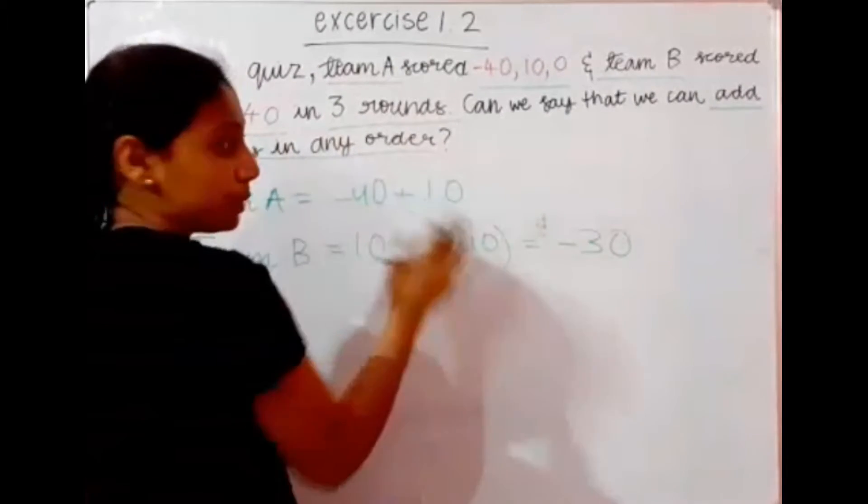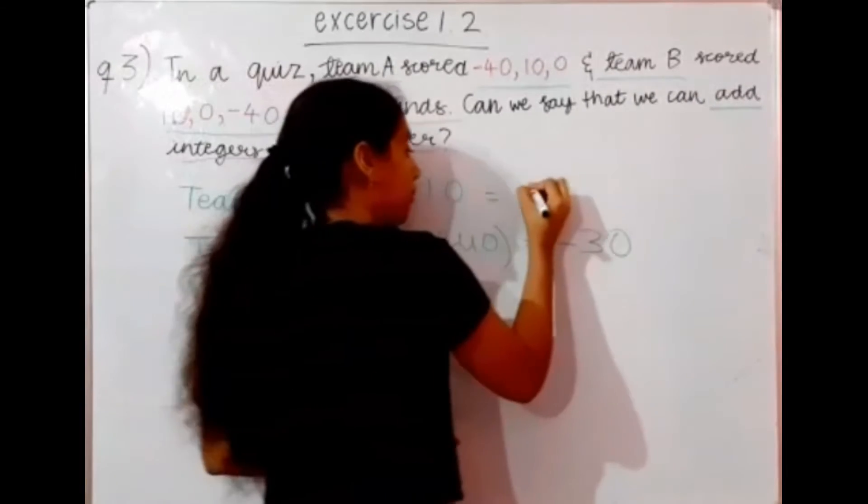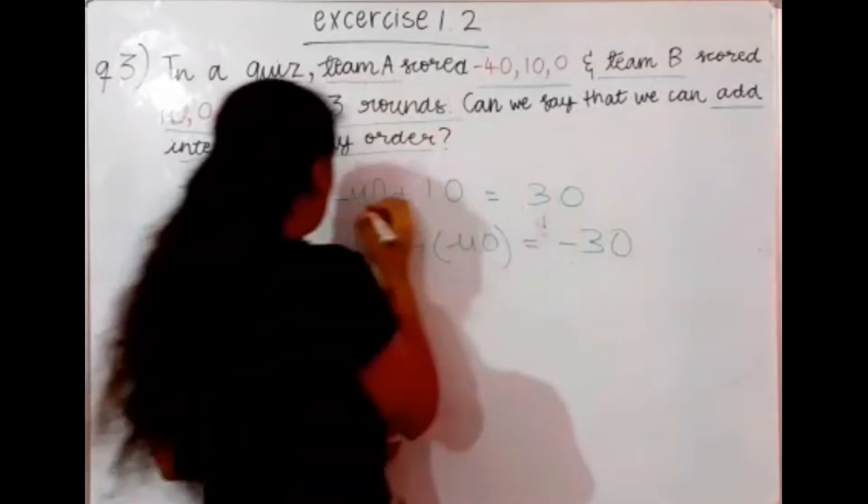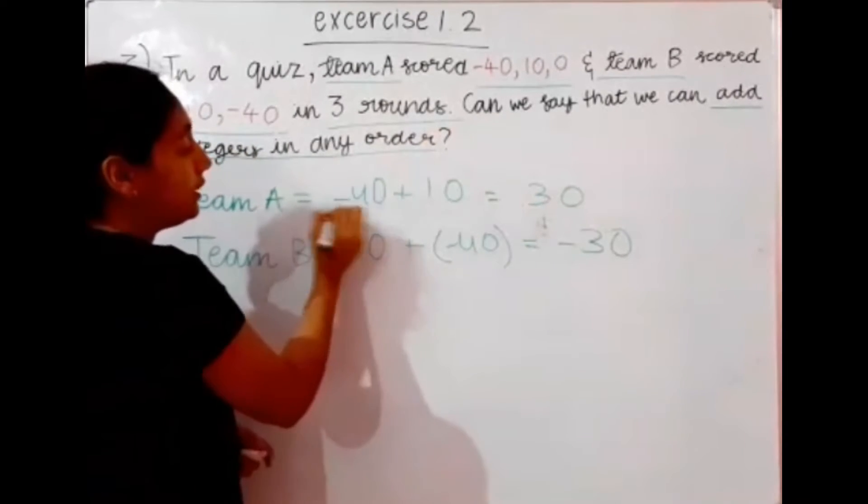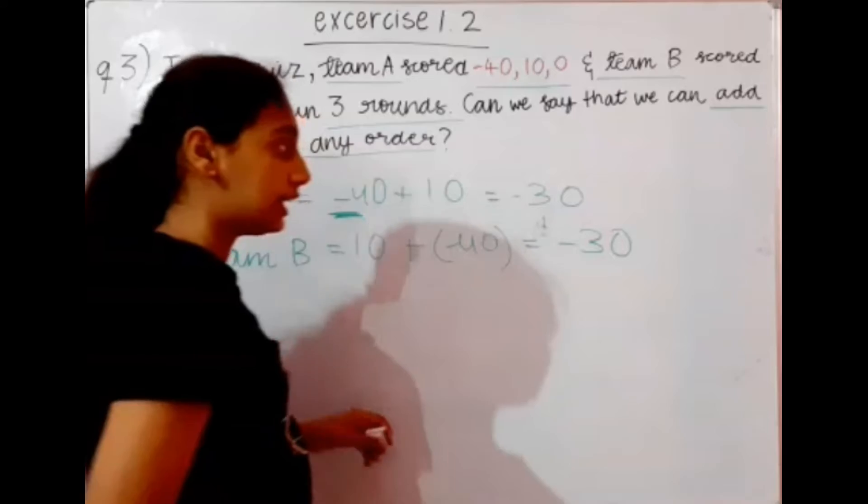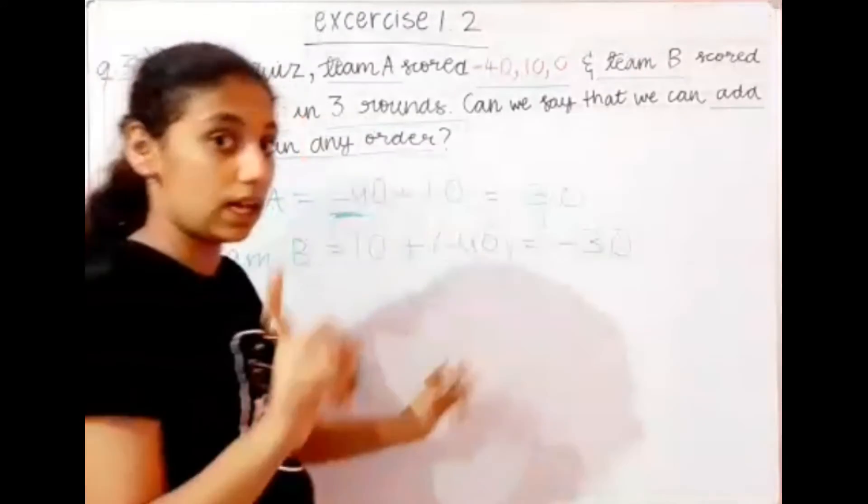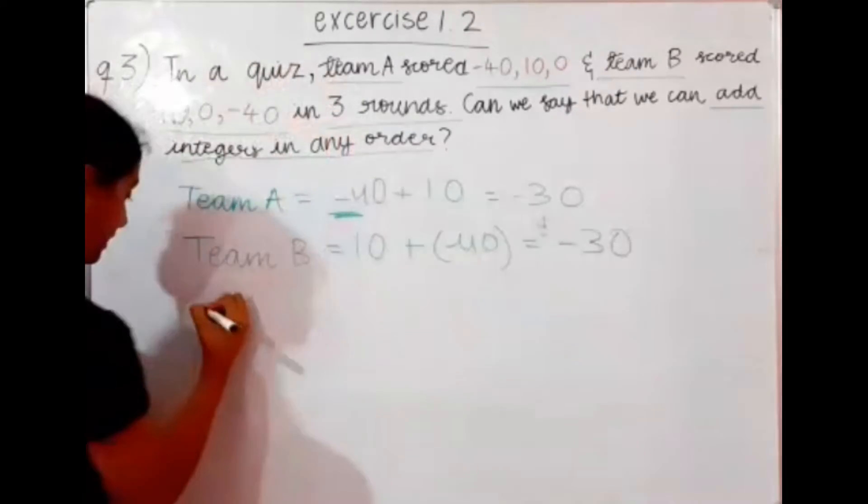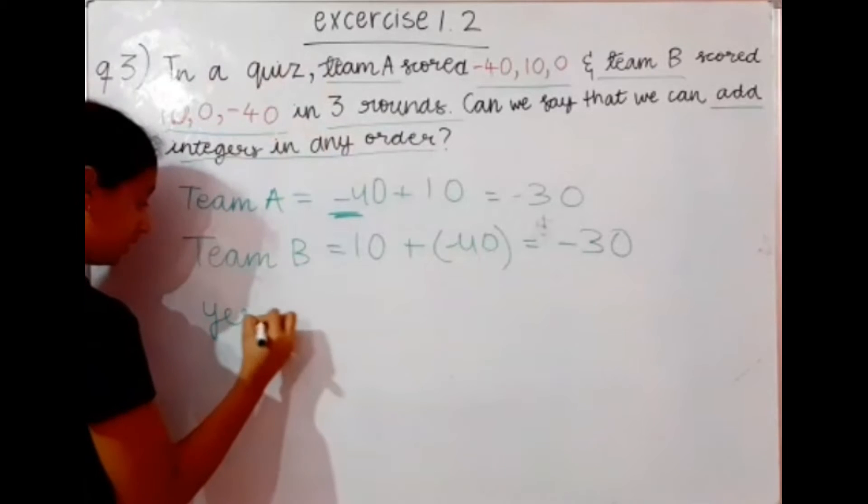Now, plus minus becomes minus 40, minus 10 equals 30. 40 is the bigger digit, and it is negative, so minus 30. Over here, our answers are the same. So we can write, yes,